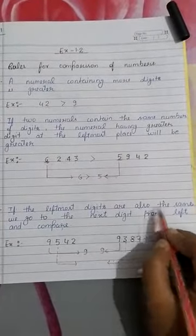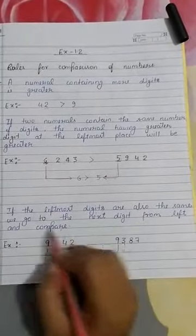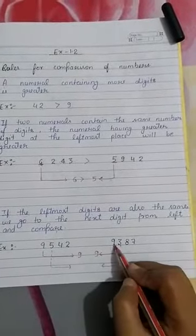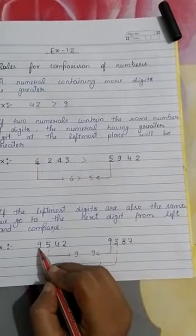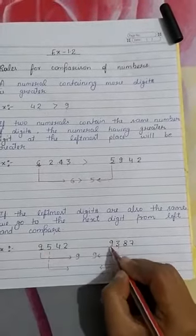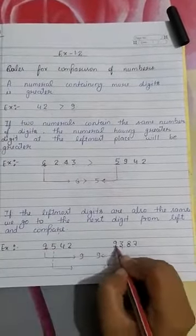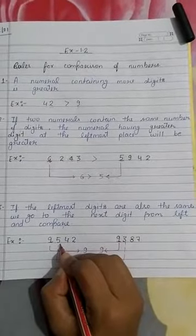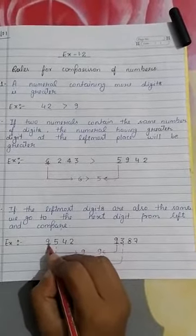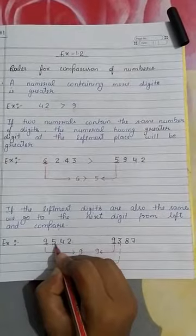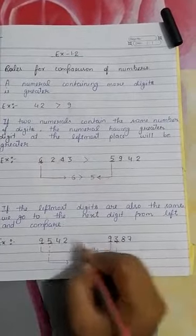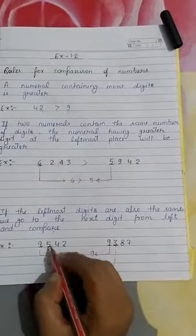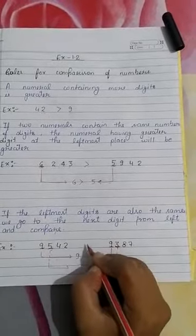Rule 3: If the leftmost digits are also the same, we go to the next digit from the left and compare. Suppose the numbers given are 9542 and 9387. We look at the leftmost place — the thousands placeholder is 9 and 9, both are the same. So we go to the next digit from the left side. We always check from the left side. The hundreds placeholder is 5 and 3 — which is greater? 5 is greater. So 9542 is the greater number. Understood?